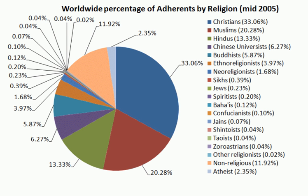Lingayatism is a distinct Shaivite tradition in India, established in the 12th century by the philosopher and social reformer Basavana. The adherents of this tradition are known as Lingayats. The term is derived from Lingavantha in Kannada, meaning one who wears Ishtalinga on their body. Ishtalinga is the representation of the god, and in Lingayat theology it is an oval-shaped emblem symbolizing Parasiva, the absolute reality. Contemporary Lingayatism follows a progressive reform-based theology with great influence in South India, especially in the state of Karnataka.